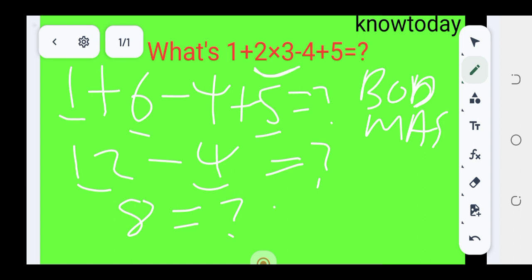Therefore, the correct answer to this trending math quiz, 1+2×3-4+5, is equal to 8.